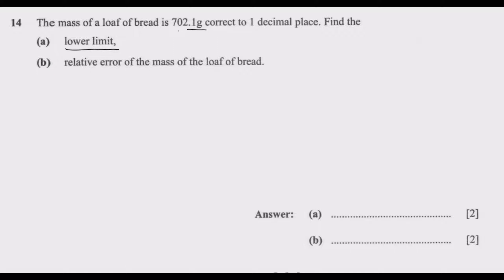Let us say after being corrected to one decimal place, we have this value which is 702.1. Then the question is, what is the lowest value this would take such that when you correct it to one decimal place, it gets to 702.1.